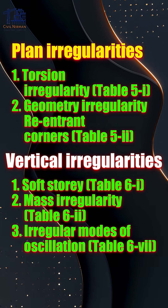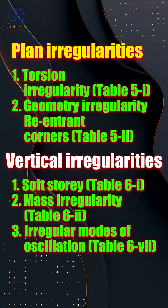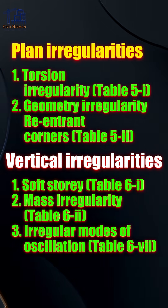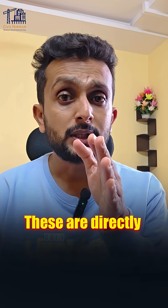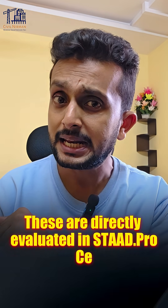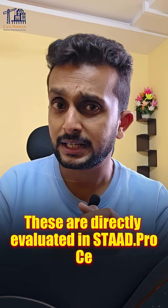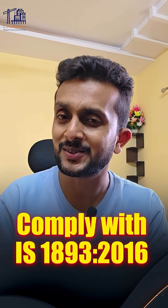For vertical irregularities, you have soft story, mass irregularity, and irregular modes of oscillation, which relate to Table 6. These are directly evaluated in STAAD.Pro Connect Edition to comply with IS 1893:2016.